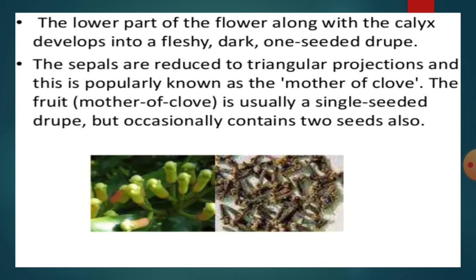The lower part of the flower along with the calyx develops into a fleshy, dark, one-seeded drupe. The sepals are reduced to triangular projections, and this is popularly known as the 'mother of clove'. The mother of clove fruit is usually a single-seeded drupe but occasionally contains two seeds.